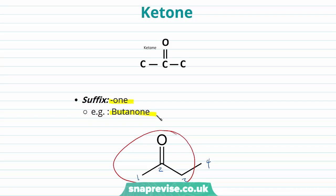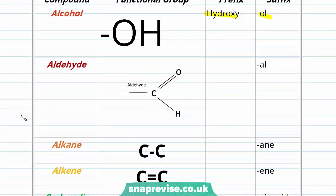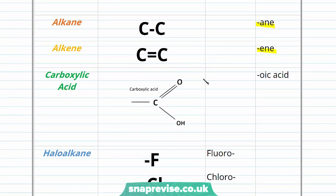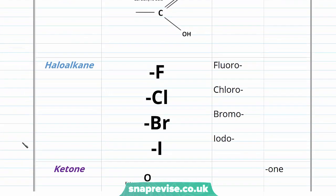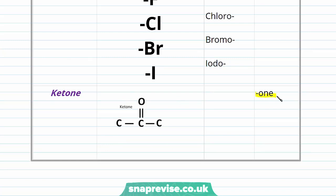Now let's quickly summarize the functional groups. For alcohol, the hydroxyl group: prefix 'hydroxy', suffix '-ol'. For aldehydes: suffix '-al'. For alkanes with single carbon-to-carbon bonds: suffix '-ane'. For alkenes with double carbon-to-carbon bonds and therefore unsaturated: suffix '-ene'. For carboxylic acids: suffix '-oic acid'. For haloalkanes, depending on the halogen: 'fluoro', 'chloro', 'bromo', or 'iodo' in the prefix. And for ketones: suffix '-one'.